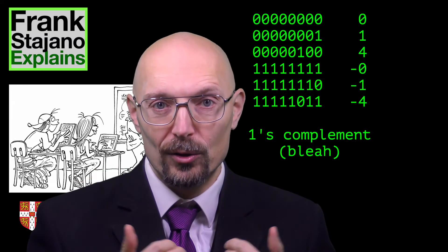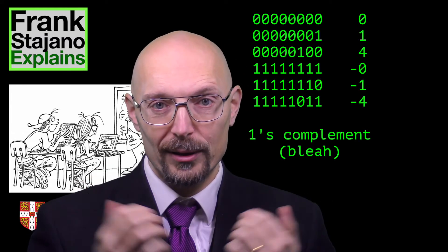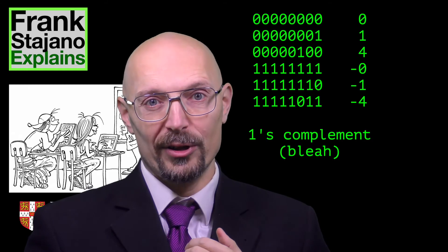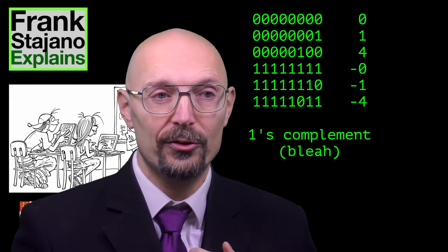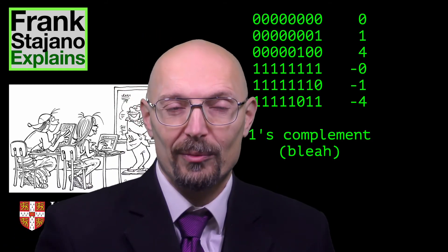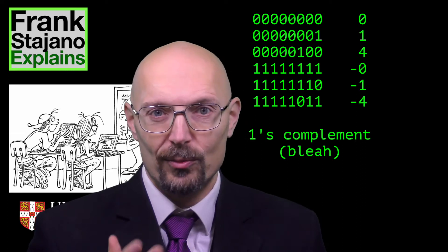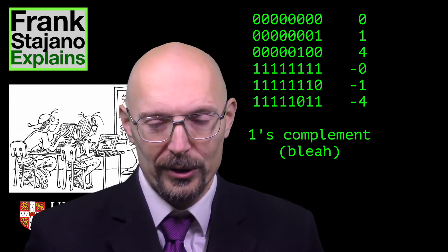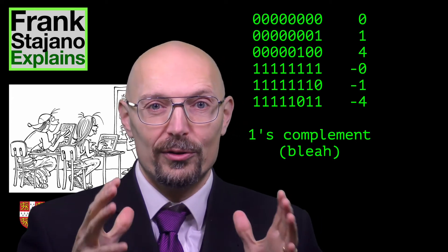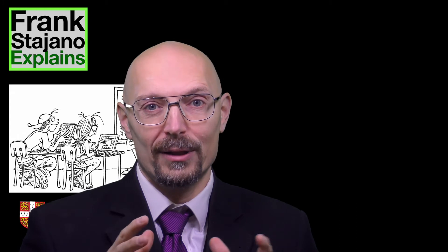Another thing you could do is a so-called one's complement, which is flipping all the bits of the numeral in order to represent its additive inverse. That works to some extent but has its own problems, which we won't go into in this brief video. We're going to focus on the one that works so much better than the others that basically all modern microprocessors use it: 2's complement.